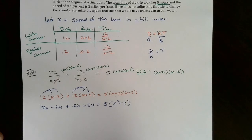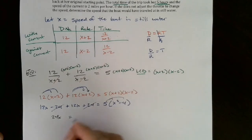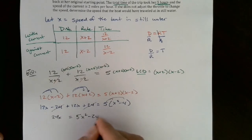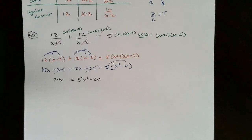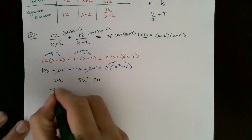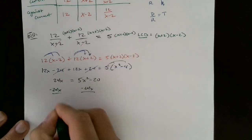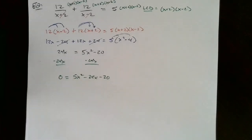Combining like terms on the left: 12x + 12x gives 24x, and −24 + 24 cancels, so we have 24x = 5(x² − 4). Distributing the 5: 24x = 5x² − 20. Since this is a quadratic equation with the highest power of 2, I want to get everything on one side with zero on the other. Subtracting 24x from each side: 0 = 5x² − 24x − 20.